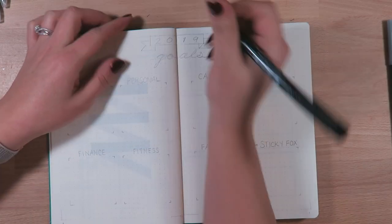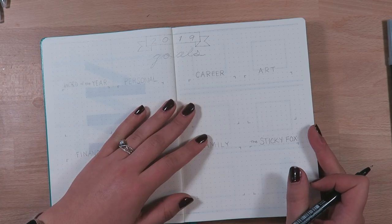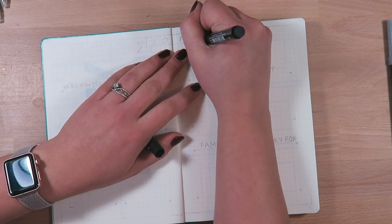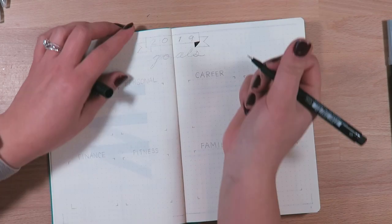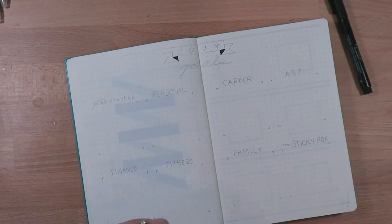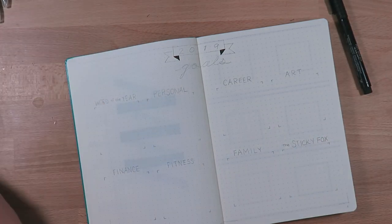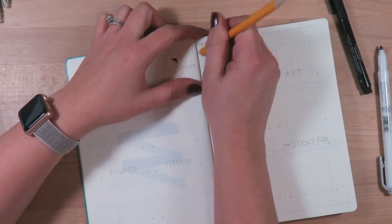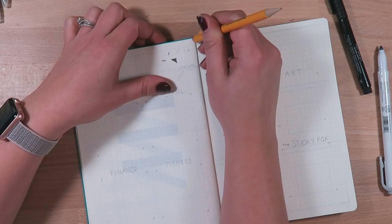For this next page I was also inspired by Amanda Rachlee on this page for the setup with the boxes and everything, and it's just very simple. A lot of the things that I do in my bullet journal are very simple and I like to keep it that way. I don't like to have too much on there.